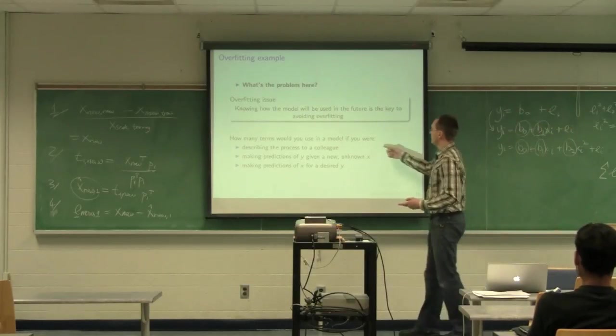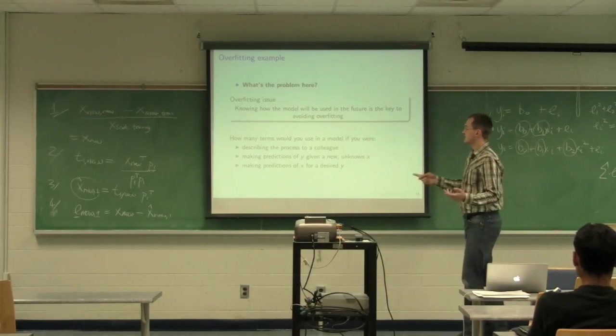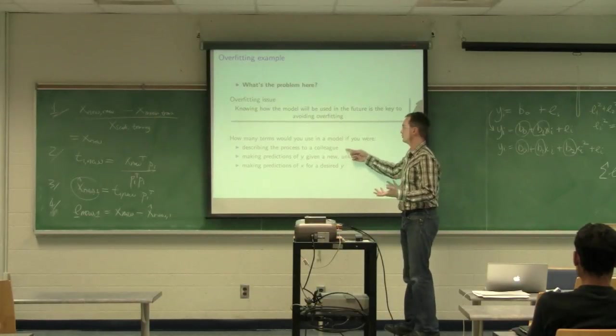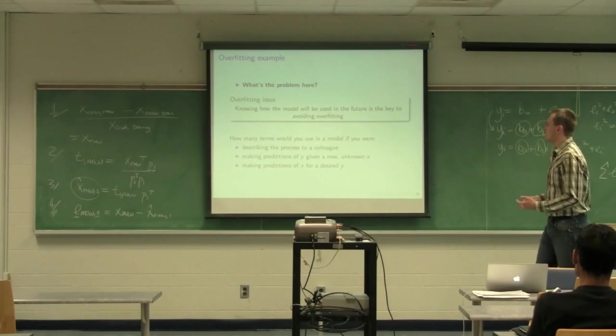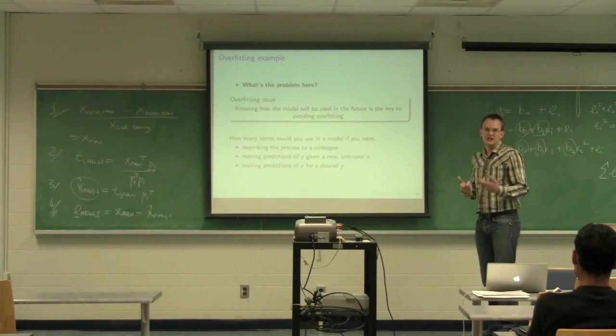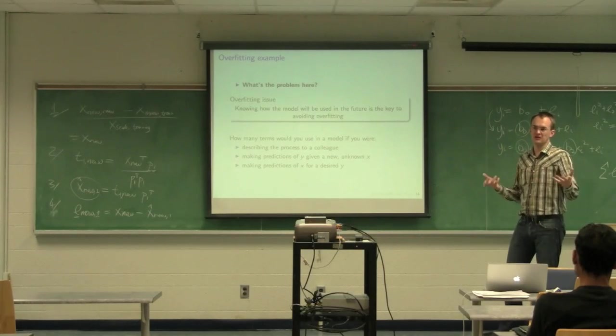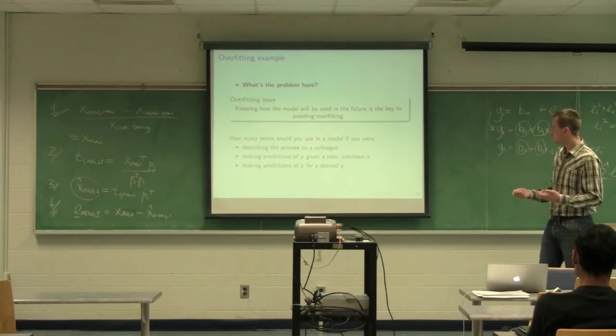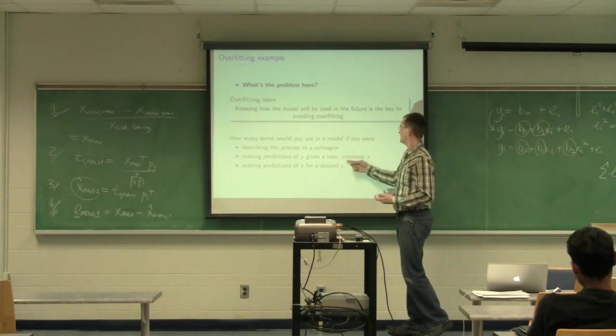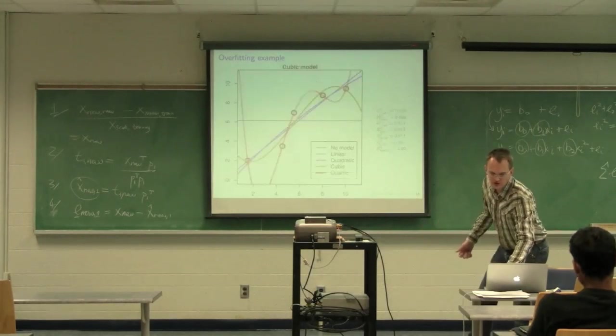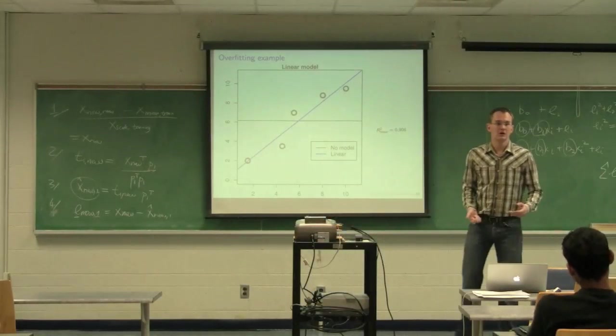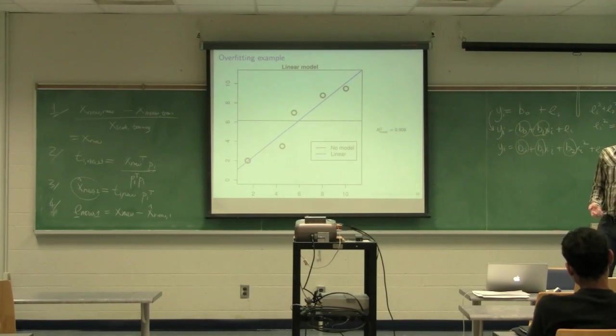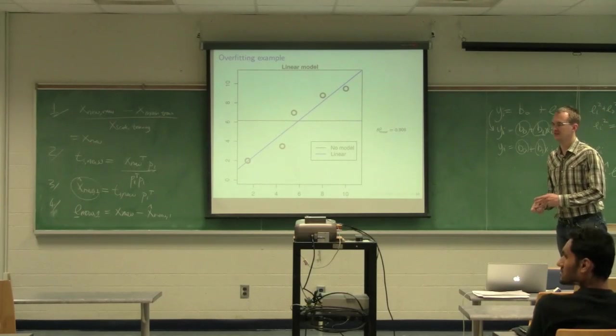So let's take a look. If you were to describe this relationship to your colleague, Landon said that he would say maybe it's linear. That would be a good way to describe this relationship. It's a linear relationship. It's unlikely you would want to describe this relationship as quadratic. It's just adding extra complexity to an informal discussion you would have with someone else. But if your objective was to make predictions of y given a new x. In other words, you want to work this way. Given a new x value, you want to make a prediction of what y would be in the future. Would you use a linear model, a quadratic model, a cubic model? Depends on where we are. Are we in a space that we fit or are we in a space that is inside of where we fit?